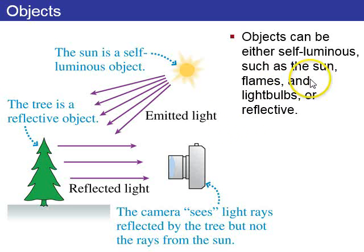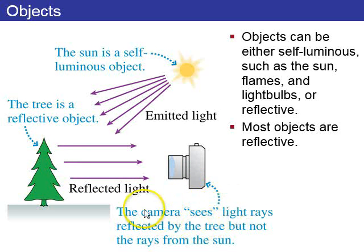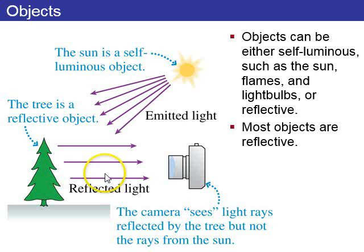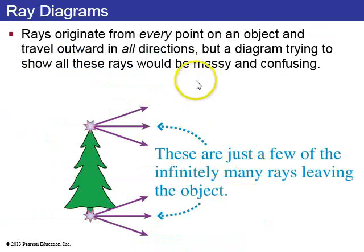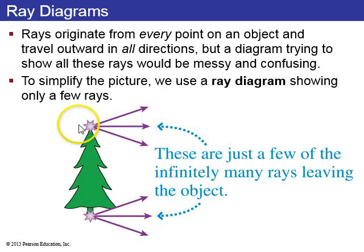Objects are either self-luminous, such as the sun, flames, or a screen, or they're reflective. Most objects you look at are reflective, like this tree — you see the light rays that are reflected by the tree. Rays originate from every point on an object and travel outward in all directions. To simplify the picture, we use a ray diagram which only shows a few of the rays that we're interested in.